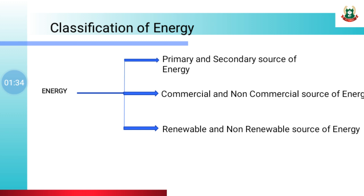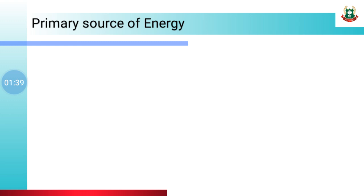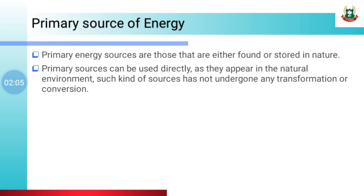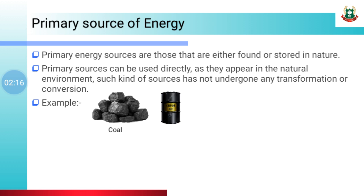First, we will see Primary Sources of Energy. Primary energy sources are those that are either found or stored in nature — they are naturally available and can be used directly without undergoing any transformation. For example: coal, oil, and natural gas.